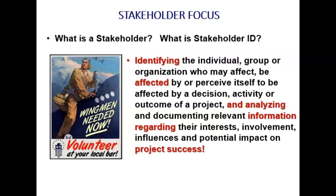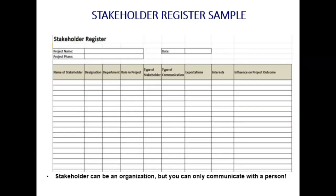This would be a sample stakeholder register — you could add to it or subtract from it. Notice you have the stakeholder's name, where they work, and what their interests, needs, and expectations are on your project. If they're negative, you can move them to the positive; if they're positive, you can leverage that for ideas. You may also want to use them in your interview process to collect requirements, constraints, assumptions, quality standards, risks, etc.